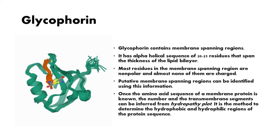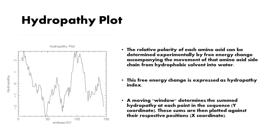The putative membrane-spanning region can be identified using this information. Once the amino acid sequence of the membrane protein is known, the number and the transmembrane segments can be inferred from the hydropathy plot. The hydropathy plot is a method to determine the hydrophobic and hydrophilic regions of the protein sequence.